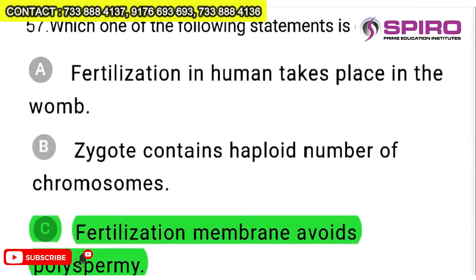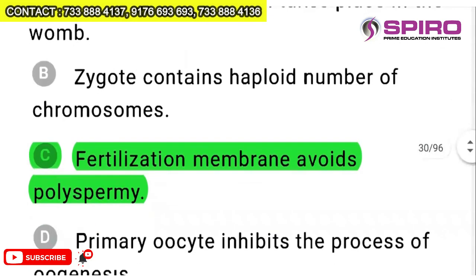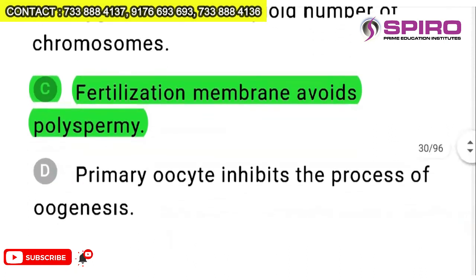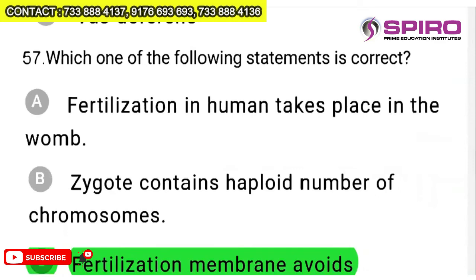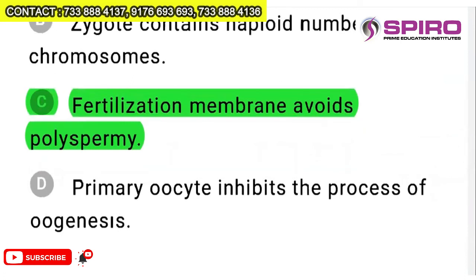Question 57: which statement is correct? Fertilization in humans takes place in the womb — incorrect (it occurs in the fallopian tube). Zygote contains haploid number of chromosomes — incorrect (diploid). Fertilization membrane avoids polyspermy — correct; only one sperm must enter. Primary oocyte inhibits the process of oogenesis — incorrect. Option C — fertilization membrane avoids polyspermy — is the most correct answer.